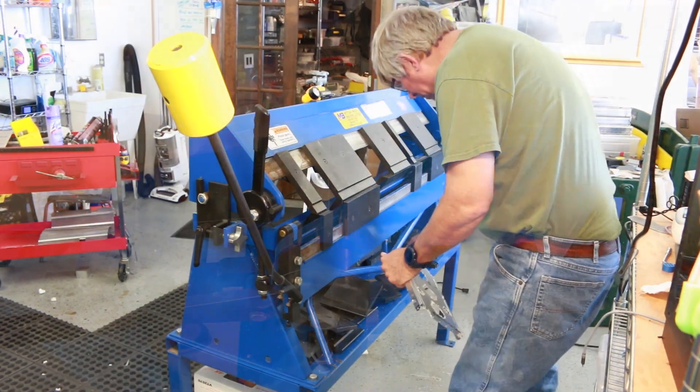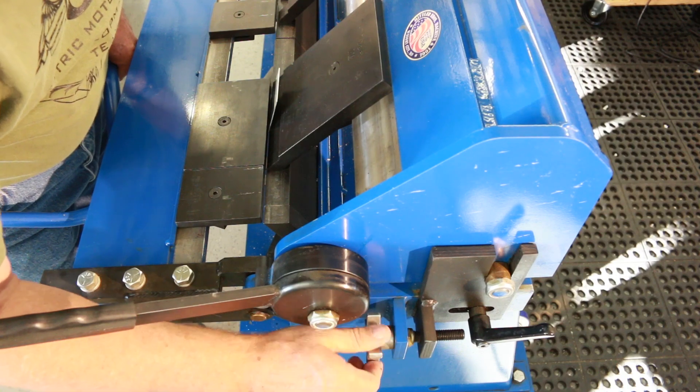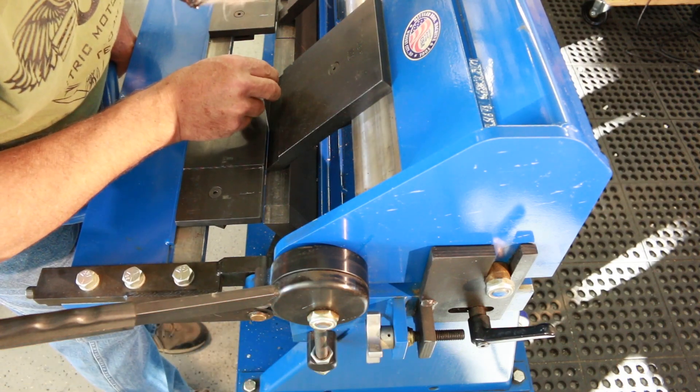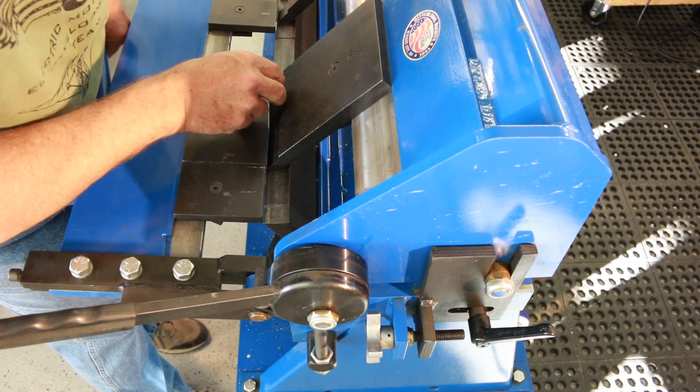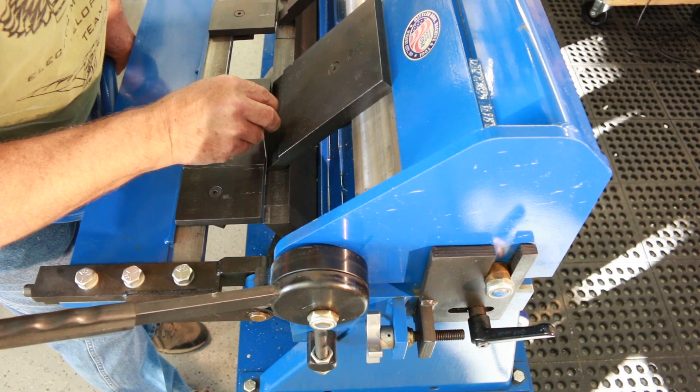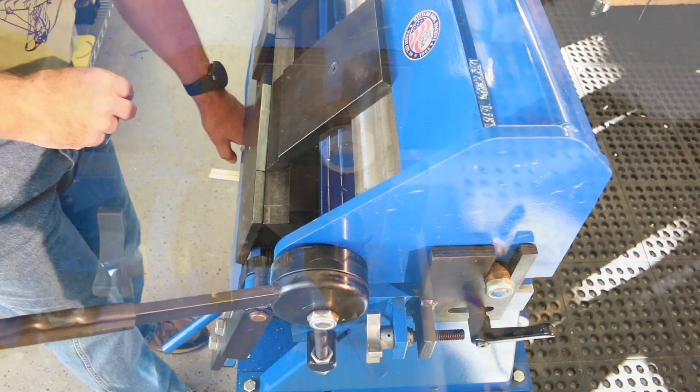If you find yourself applying an inordinate amount of pressure during the bend, it probably means that you've just misadjusted the brake. Don't force it. Adjusting the clamping finger setback is quite simple. Move the bending leaf to the angle that you will be bending, this is typically 90 degrees.